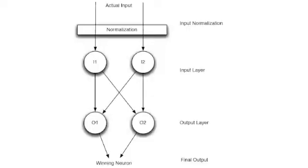Here you see the structure of the self-organizing map. You can see that we have actual input coming in at the top, which goes through the input normalization, then into the input layer, and finally the output layer. The final output is determined as a winning neuron. We don't actually take the output from all the output neurons — rather, it's a winner-take-all strategy. So we take one winning neuron, which is the neuron that classifies which group the input belonged to.